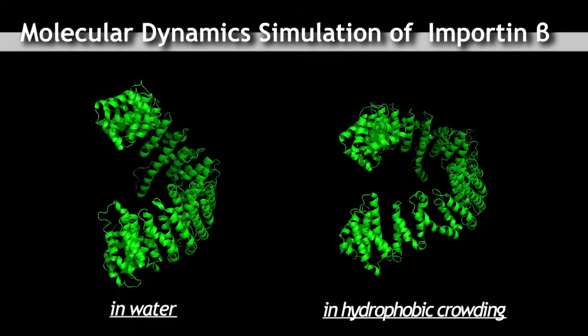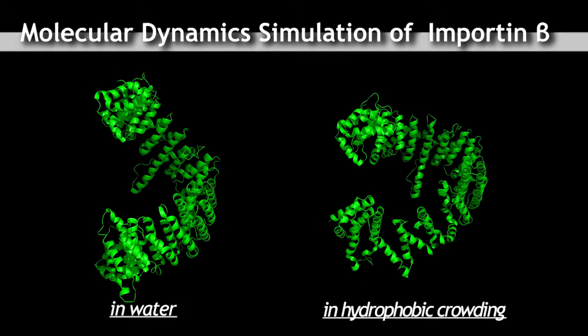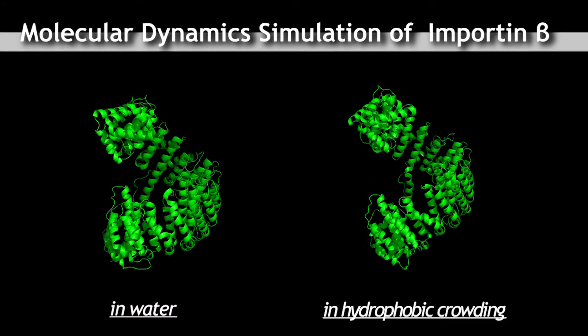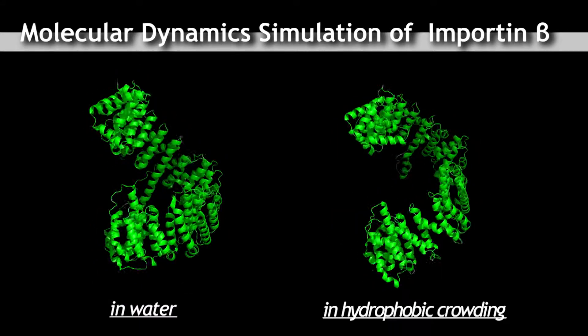You can see the structure of importin beta is fluctuating all the time, but only in the crowding it is being stretched.